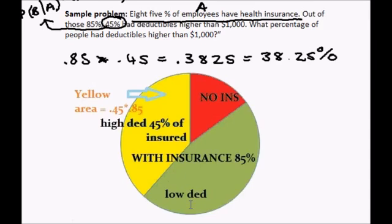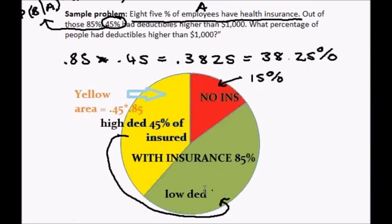Here is a diagram of the group of people. 85 percent of the population. So this green and yellow area equals 85 percent. And this red area, the people that do not have insurance, is 15 percent. So this area and this area equals 85 percent. Now out of this 85 percent, this yellow area, the 45 percent, is the subgroup with these high deductibles over $1,000.